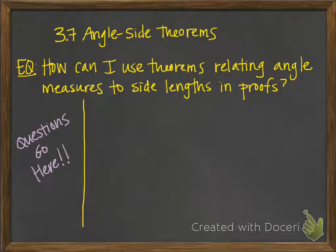Hi students, these notes are over section 3.7, which covers angle-side theorems. These are theorems that relate angles to sides of triangles, particularly their sizes. The essential question is: how can I use theorems relating angle measures to side lengths in proofs?